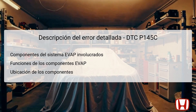In the Honda CR-V, the EVAP canister is typically located near the fuel tank, while the purge valve is often mounted on the engine or close to the intake manifold. The role of the EVAP canister is to prevent fuel vapors from escaping into the atmosphere, thereby reducing harmful emissions. The purge valve allows for the controlled release of these vapors into the engine for burning during combustion. If there is a malfunction in this system, it can lead to decreased fuel efficiency and increased emissions. Understanding the locations and functions of these components is critical when addressing DTC P145C.